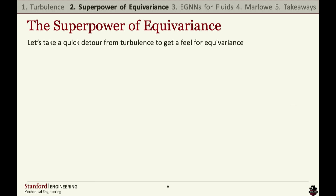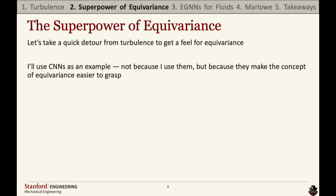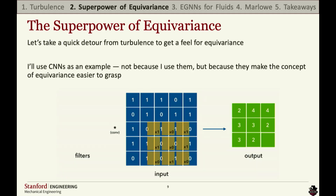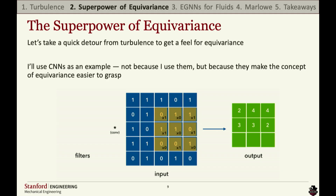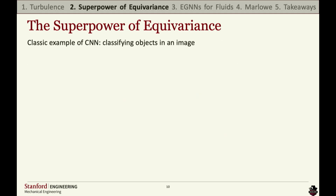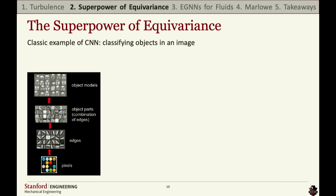We decided to go with equivariance. I'm going to step away from turbulence to give a feel for it, and I'll also talk about CNNs — I don't use CNNs, but it's easier to grasp the concept. A CNN operates by passing a filter across an input and identifying how that pattern matches in the output. In a classical example of how a CNN classifies an object, it passes a filter along the pixels to form edges, then combines those edges into parts, and finally combines those parts into the object itself.